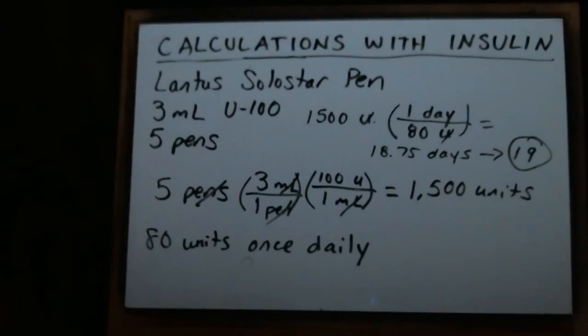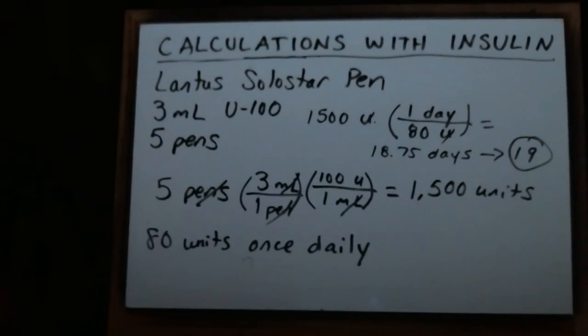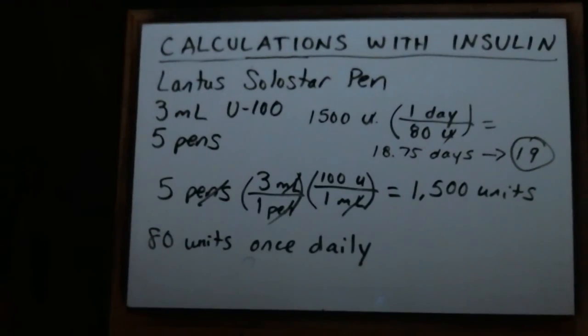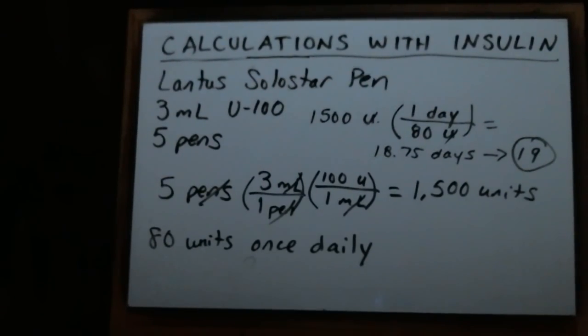You would go through similar calculations if you were using vials. If you're giving a patient one vial of Lantus - one vial of Lantus is a 10 mL vial of U-100, so there's a thousand units - your calculation would be to use a thousand units divided by 80 instead of 1500. When you do that calculation, a thousand units divided by 80, you wind up with 12 and a half days. You can bill for a 13 day supply in that case.